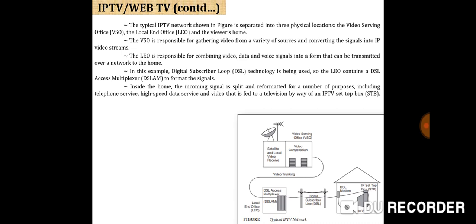IP TV has been widely used since around 2002 to distribute television and audiovisual media around businesses and commercial sites, whether as live TV channels or video on demand. Examples of types of commercial users include airports, schools, offices, hotels, and sports stadiums, to name just a few.